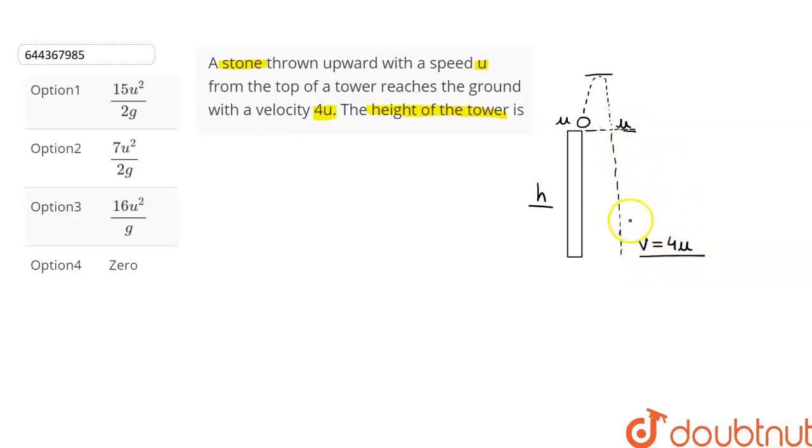The distance travelled will be equal to the height of the tower. So we can use the formula v² - u² = 2as.